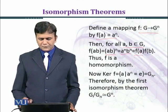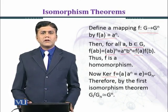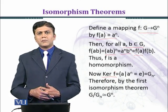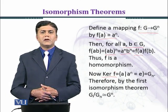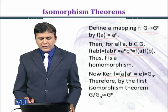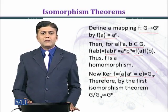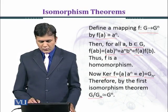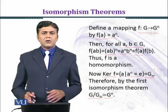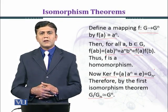Now we want to find the kernel of f. The kernel of f contains all a such that a^n = e, which is equal to G_n. By the First Isomorphism Theorem, G over kernel of f — that is, G over G_n — is isomorphic to G^n. Now we shall consider another example in which we shall apply the Second Isomorphism Theorem.